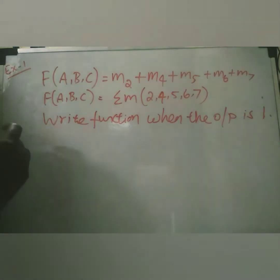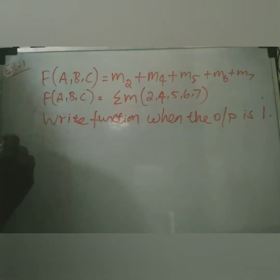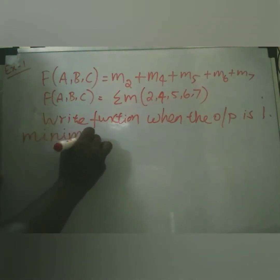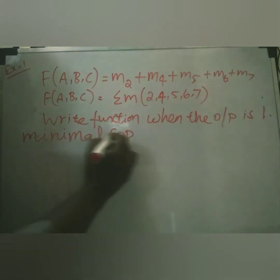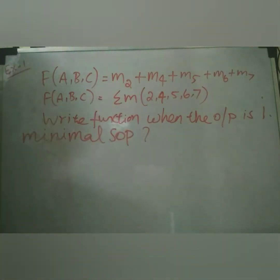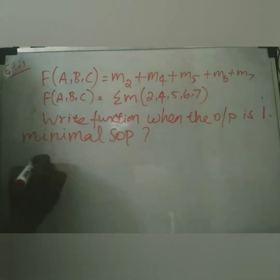The question asks us to derive the minimal SOP from this expression. Even if the function is given in min term notation without variables, you can easily write the expression. You just write the truth table for the three-variable function A, B, C.